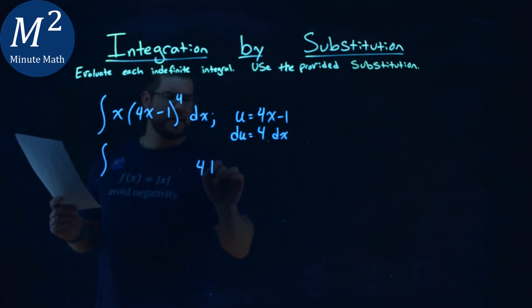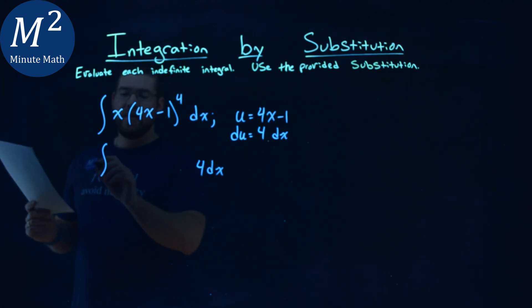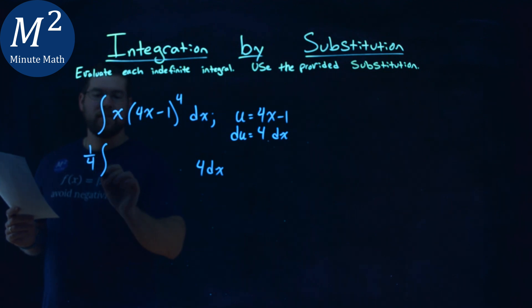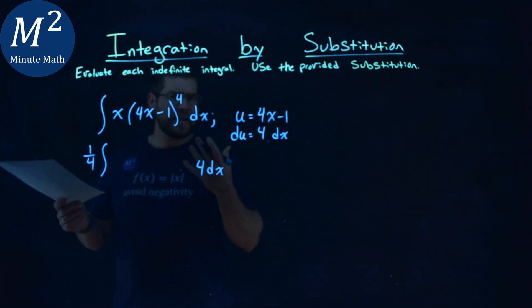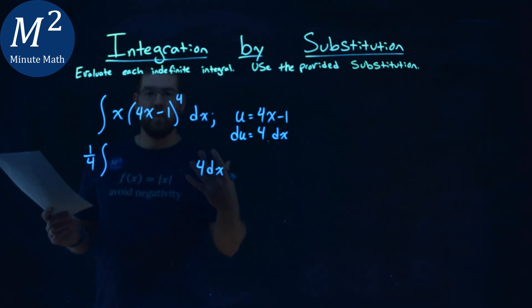So if I want a 4dx going on right there, instead of just a dx to have my du, I have to counteract that with a 1/4th out front. Notice I didn't change anything so far. 4 and 1/4th cancel out to be a 1, and we're good.